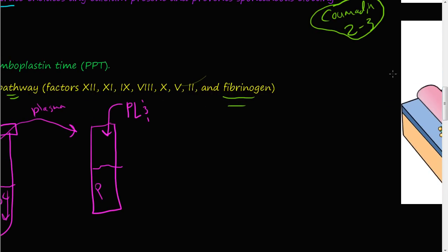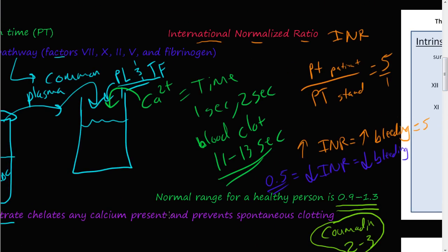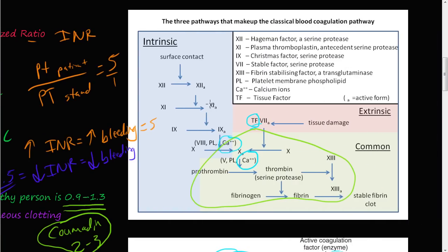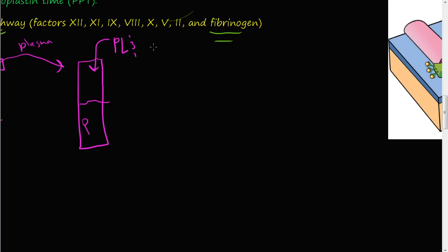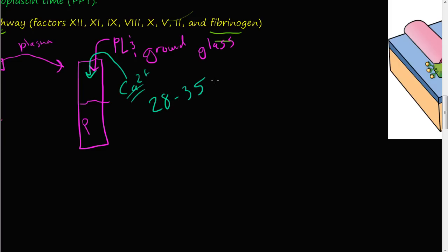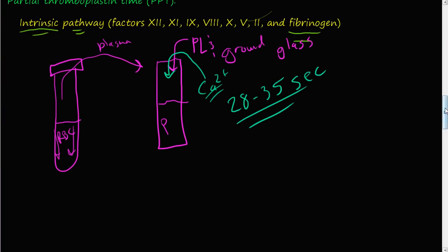Instead of tissue factor as used in the PT test, ground glass is added along with the phospholipids — because the intrinsic pathway only needs a surface contact to activate, not tissue damage. They mix it all together, then add calcium and start the timer to see how long it takes for a blood clot to form. Normal PTT is 28 to 35 seconds.